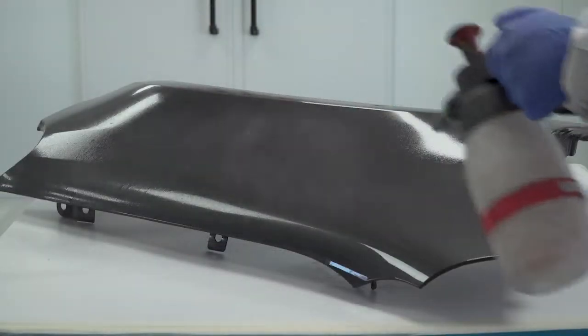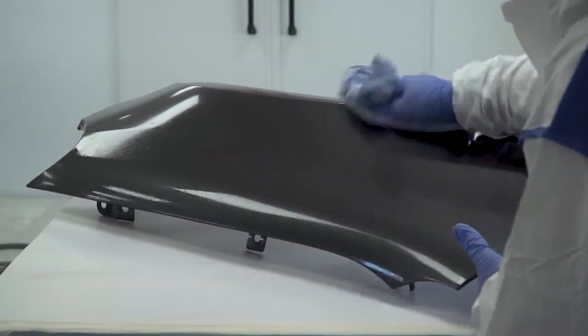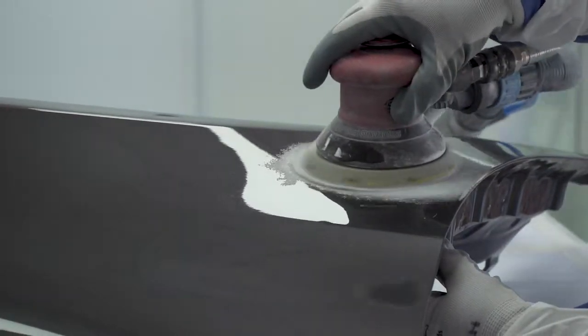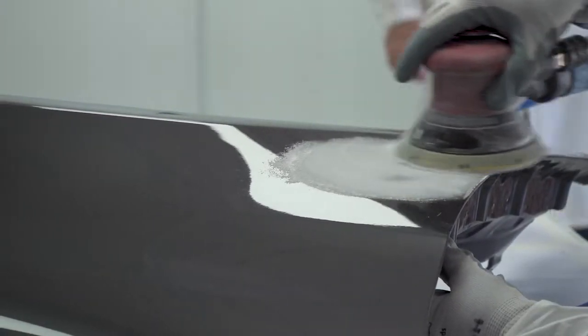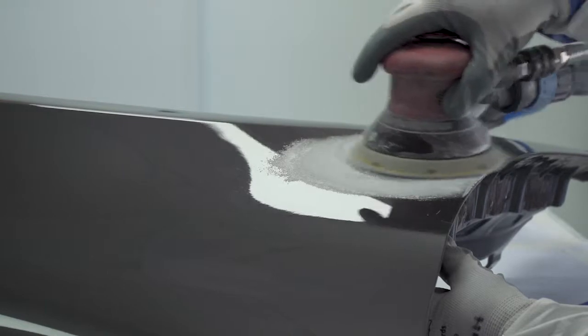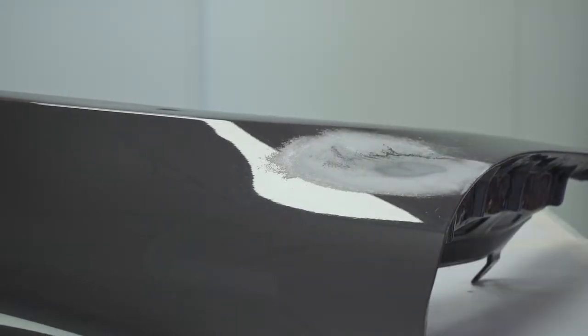Begin by cleaning the area to be filled with a solvent degreaser. Sand the area to be filled with a P180 disc on a DA sander. This is just to create a key for adhesion and does not need to be back to the bare substrate.